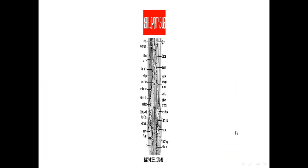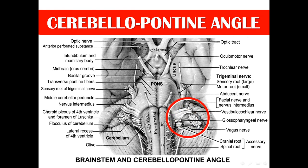In another view of the cerebellopontine angle: this is the facial nerve formed of two roots — motor root and the nervus intermedius. This is the vestibulocochlear nerve formed of the vestibular part and the cochlear part. This is the glossopharyngeal nerve. And this is the lateral recess, the foramen of Luschka, and the choroid plexus of the fourth ventricle coming out from the foramen of Luschka.